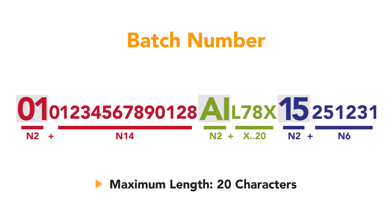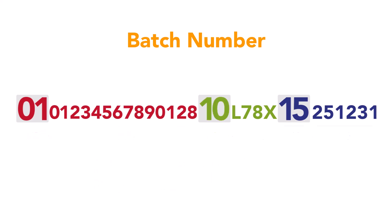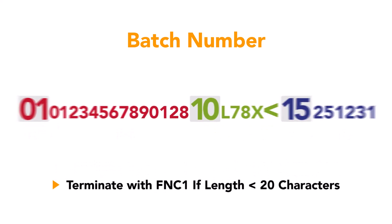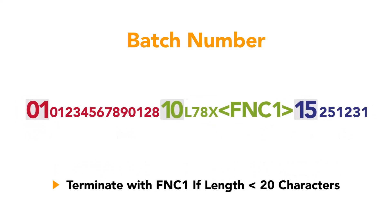It's different with a batch number — it can contain up to 20 characters. If the full capacity of 20 characters is not used, the batch number must end with an FNC1 character.